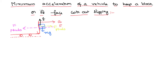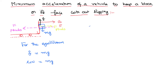Therefore our system can be in an equilibrium state. For the equilibrium state, the frictional force will compensate the weight, and therefore the body is not going to slip down. So μ × Normal Reaction = Weight. Here the normal reaction is equal to the pseudo-force. That gives μ × ma = mg. So the acceleration acting on the block shall be equal to g/μ.